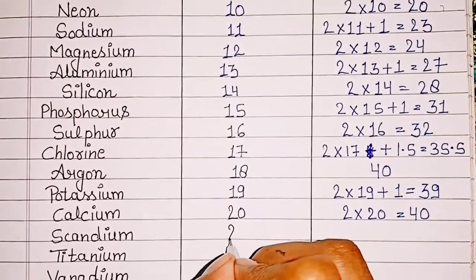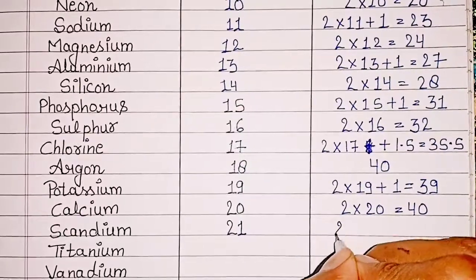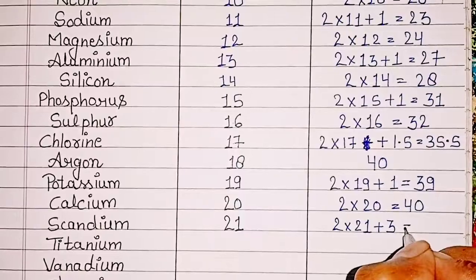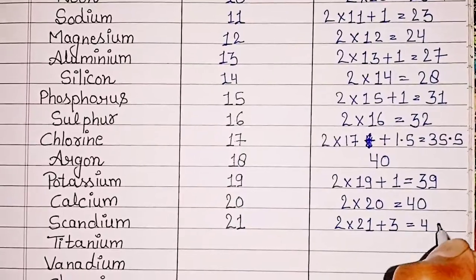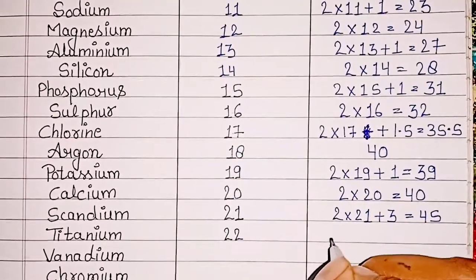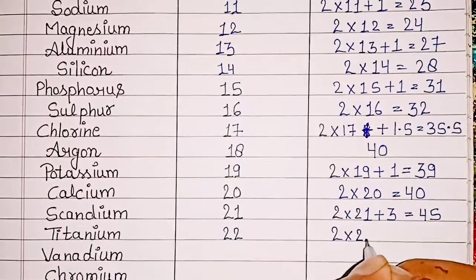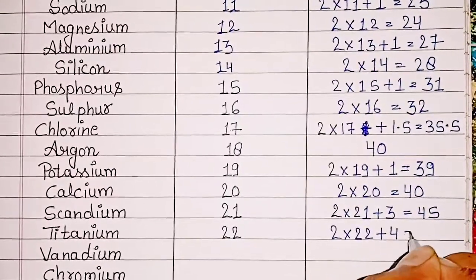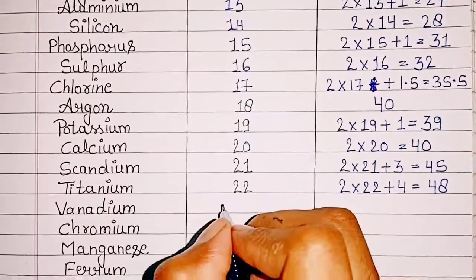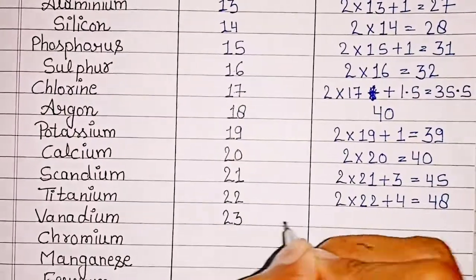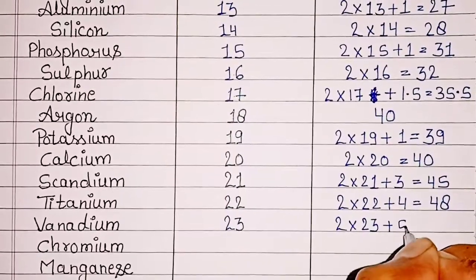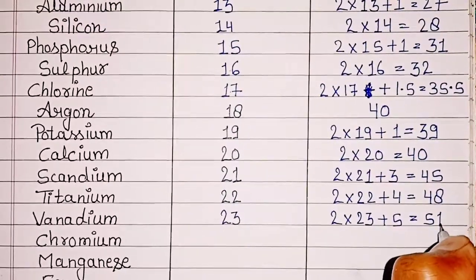Scandium: atomic number 21, mass number 2 x 21 + 3 = 45. Titanium: atomic number 22, mass number 2 x 22 + 4 = 48. Vanadium: atomic number 23, mass number 2 x 23 + 5 = 51.